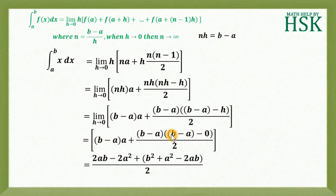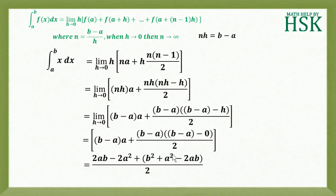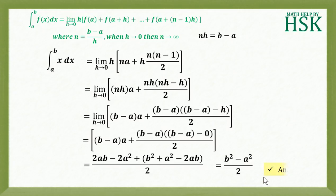This gives (b - a)·a + (b - a)²/2. Expanding (b - a)² = b² + a² - 2ab, and opening the bracket gives ab - a² + (2ab - 2a²)/2... simplifying: the 2ab terms cancel, and combining a² terms gives (b² - a²)/2. So the required answer is ∫x dx from a to b = (b² - a²)/2.